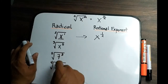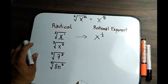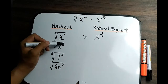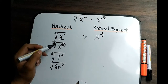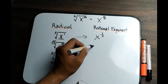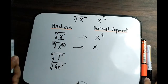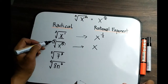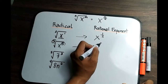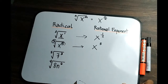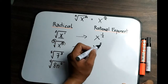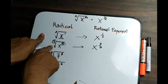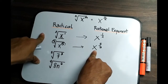For example number 2, we have the cubed root of x raised to 5. The index is 3, and the exponent of the radicand x is 5. So the base will be x. You write 5 at the numerator of the exponent, and your index 3 becomes the denominator. The converted form of the cube root of x raised to 5 is x raised to 5 all over 3.